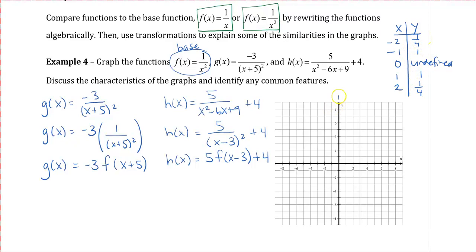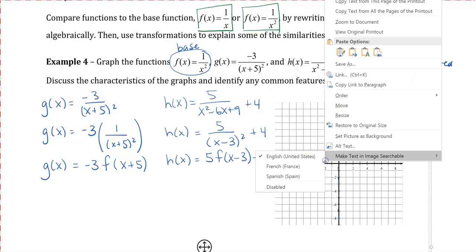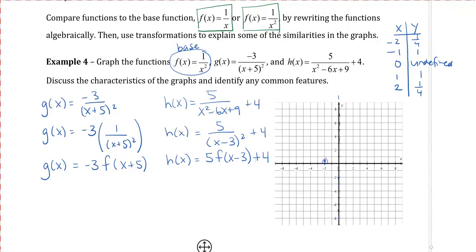At x = 0 we have our asymptote. At x = −2, y = 1/4, so it's really small. At x = −1, y = 1, and the same on the other side. Connecting these four points, we get a graph that looks like this. When the function is squared in the denominator, it's always going to be positive. That is why we only have a graph on the positive side, or above the x-axis. This is our f(x).